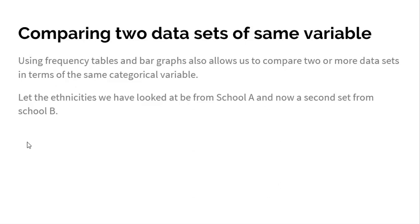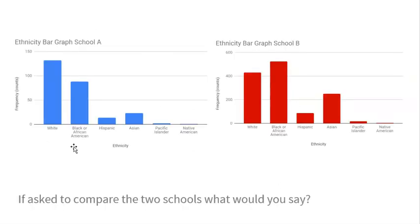Now we also need to be able to compare two data sets of the same variable using frequency tables and bar graphs. We're talking about the same variable measured from two different groups. For example, let's look at ethnicities from School A and a new set from School B — the same variable, ethnicity, but from two different data sets.